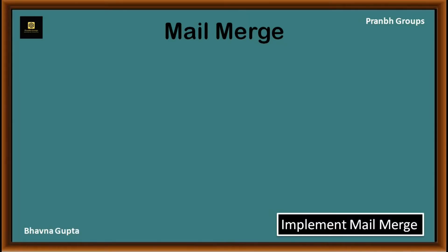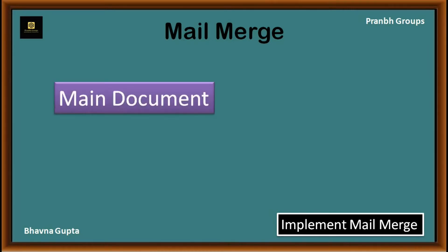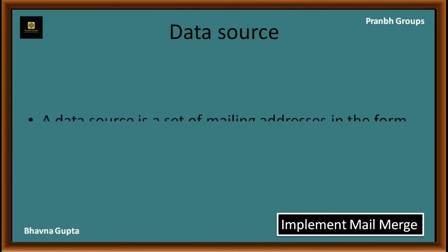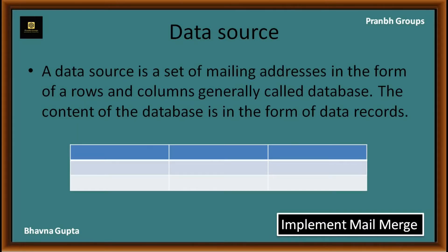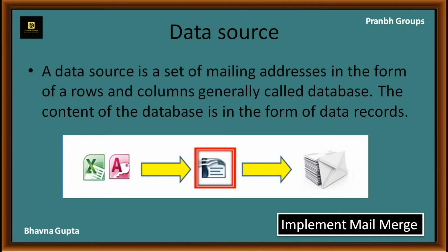In mail merge, two documents are created: one with the common content, called the main document or form letter, and another holding the address list, called the data source. A data source is a set of mailing addresses in the form of rows and columns, generally called a database. The content of the database is in the form of data records — each row is a record of each person, which contains various fields such as name, address, pin code, etc. It is also possible to create an address book during the mail merge process using the Mail Merge Wizard.